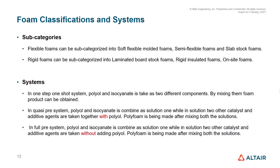Flexible foams can be subcategorized into soft flexible molded foams, semi-flexible, and slab stock foams. Rigid foams can be subcategorized into laminated board stock, rigid insulated, and on-site foams.